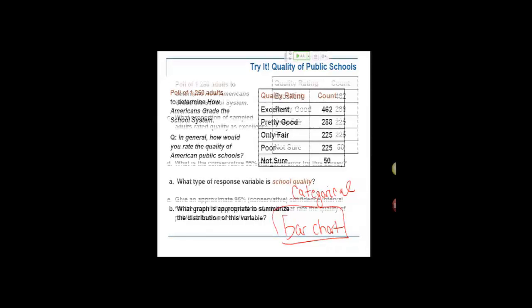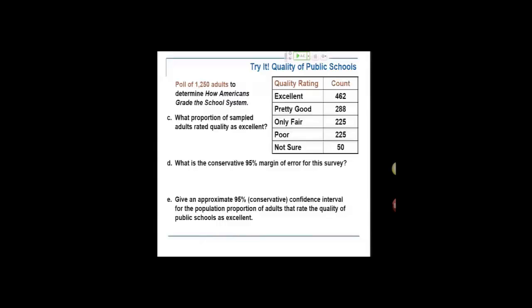Let's work out what proportion of our sampled adults said excellent. 462 divided by 1250. We have about 36, 37 percent. 0.3696, how about 0.37 or 37 percent? About 37 percent of our surveyed adults would rate the schools as excellent.